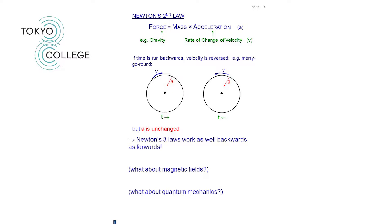If you imagine that you are sitting on a merry-go-round, say, and the merry-go-round is rotating like this, then you'll feel a force on your back because you are accelerating towards the center of the merry-go-round. If the time was reversed so that the merry-go-round runs backwards, you see the velocity is reversed. But you still feel the same acceleration towards the center here. So when time is reversed, acceleration is unchanged. In other words, Newton's three laws work just as well backwards as forwards.